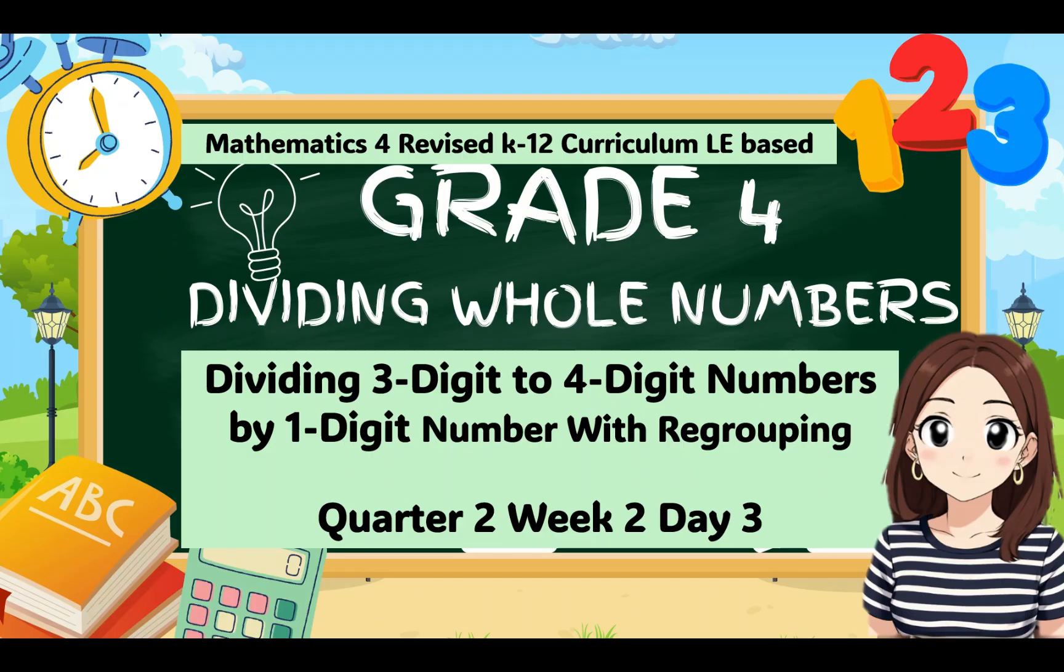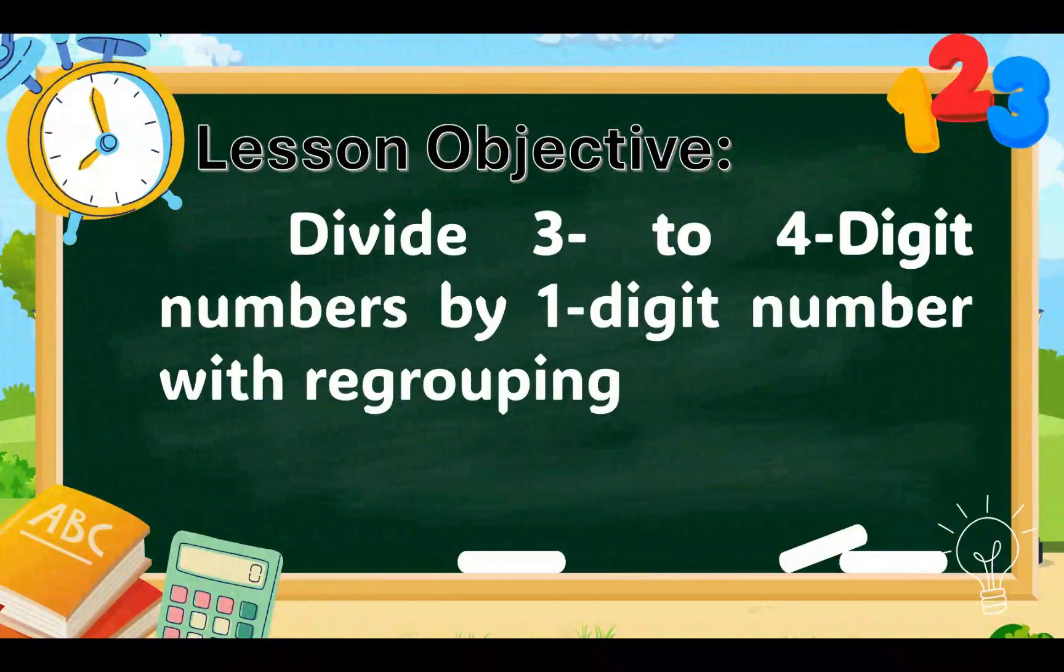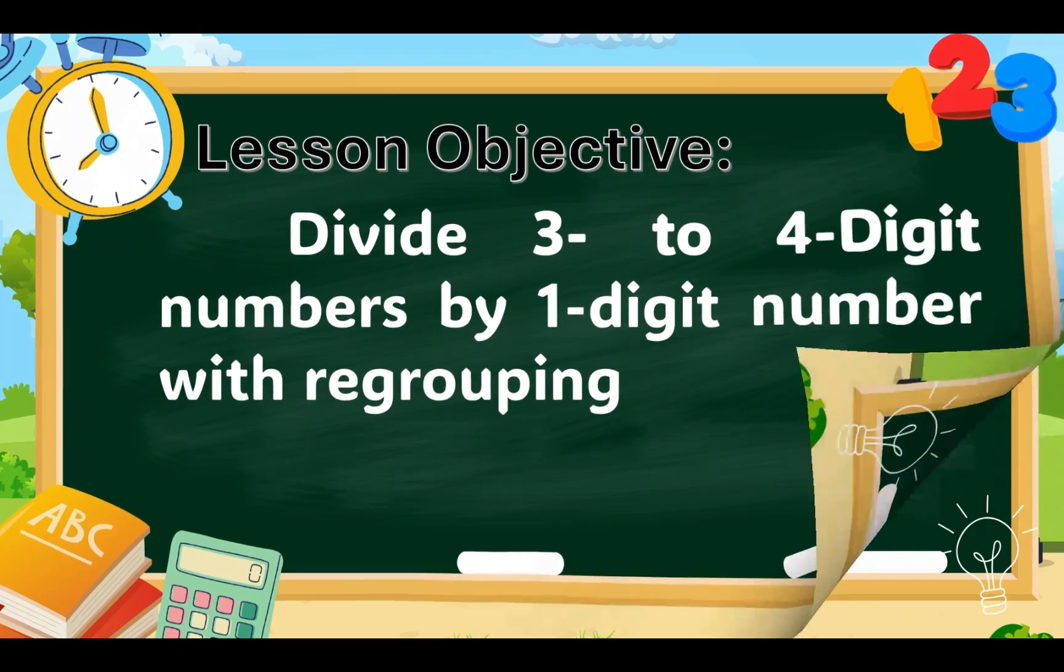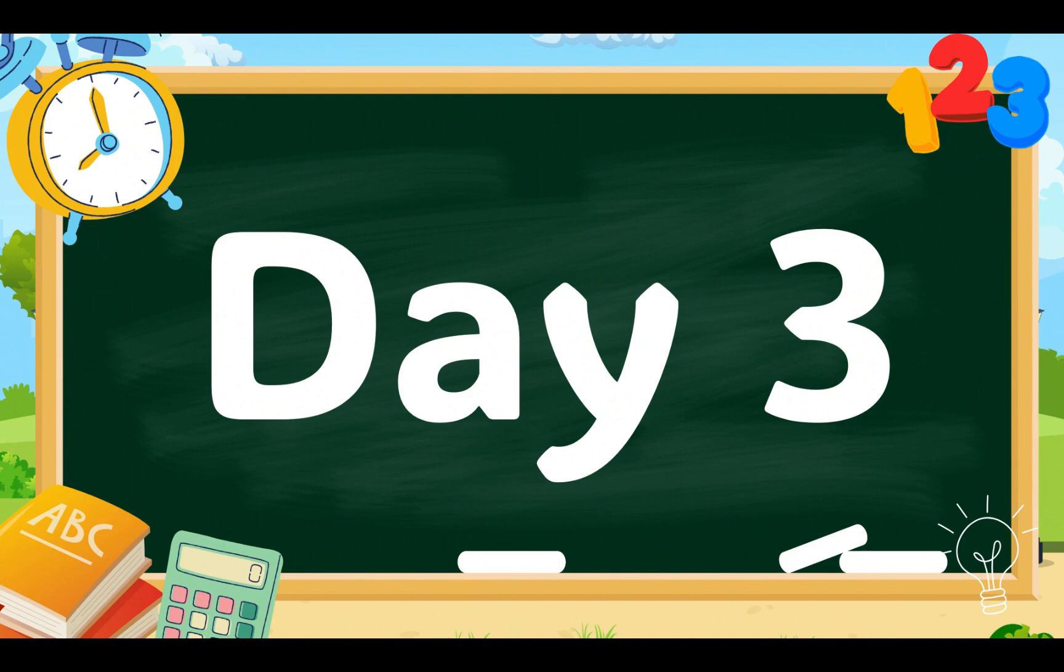Now, our topic is Dividing Whole Numbers, Dividing 3-digit to 4-digit Numbers by 1-digit Number with Regrouping. Our lesson objective is to divide 3-4-digit Numbers by 1-digit Number with Regrouping. This is for Day 3.